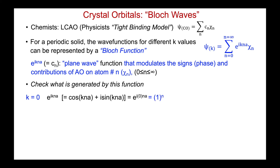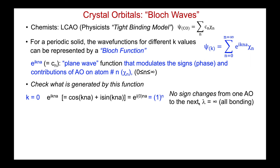Let's check what is generated by this function for simple examples. For k = 0, we're adding all atomic orbitals in phase, with no sign changes. e^(ikna) equals cos(kna) + i·sin(kna); for k = 0, this equals 1 raised to the power n — where n identifies each atom, starting from atom zero. One raised to any value of n is of course one, so there are no sign changes from one atomic orbital to the next, the wavelength is infinity, there are no nodes, and everybody is bonding.